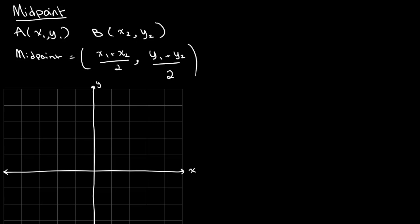Let's say we have point A which is equal to (1, -1) and point B which is equal to (4, 2), and we are asked to find the midpoint — the point that's halfway between these two.